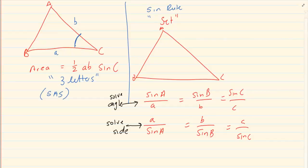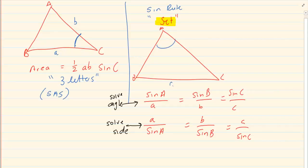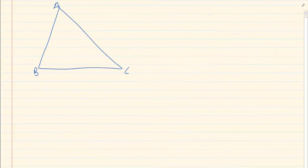When I talk about a set — if this is angle A, then opposite would be side a (small a). This is angle B, opposite is side b, and angle C has side c. When you have a set, if you look at the information and you see that you have an angle and a matching side, then you can use the sin rule.